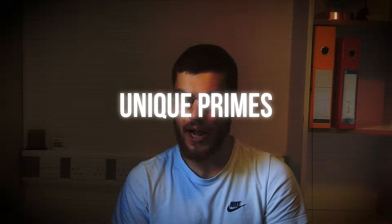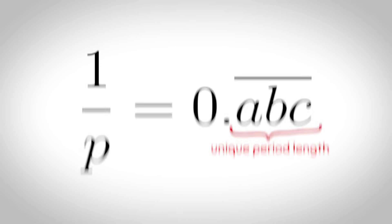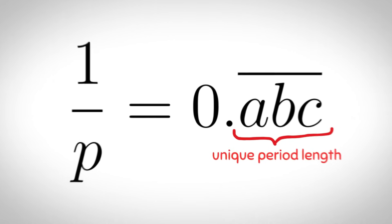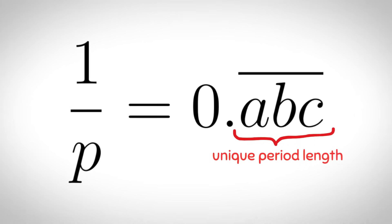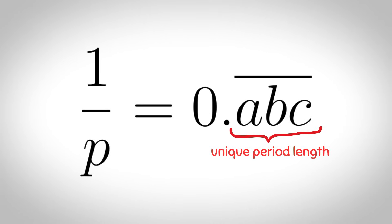Unique primes: prime numbers where the decimal expansion of 1 over p has a period length which is unique to that number alone. Here are some examples: 3, 11, 37, and then a large prime number with many digits.